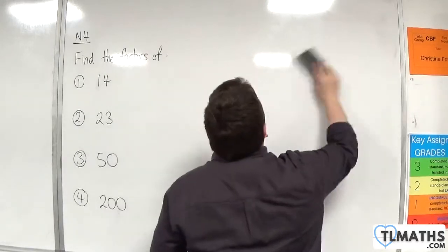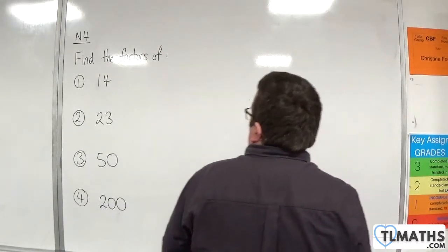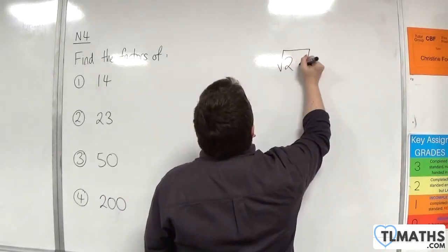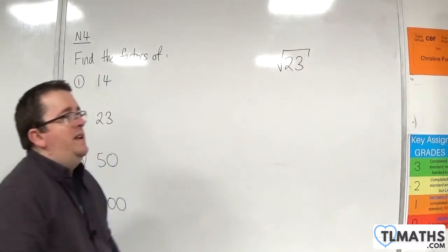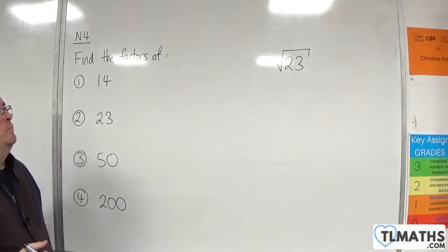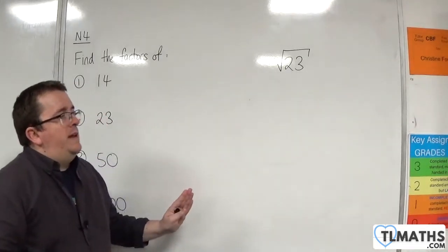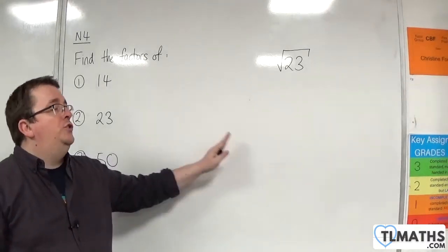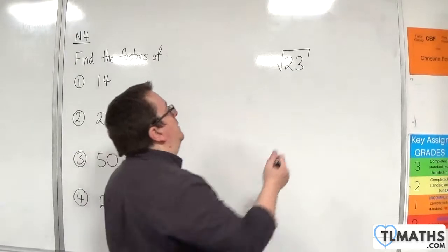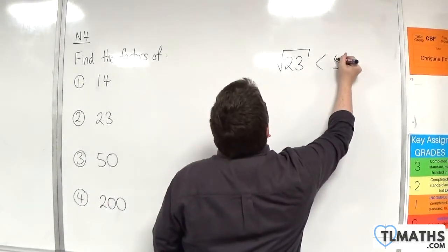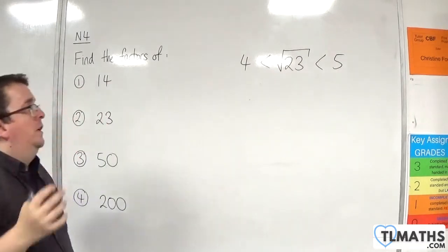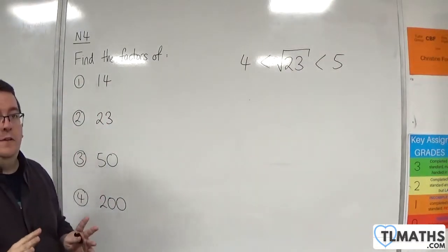Let's take a look at number 2. Now, 23. The square root of 23. Which two square numbers is it between? Well, 23 is between 16 and 25, which is 4 squared and 5 squared. So, this is between 4 and 5. So, I don't need to look any further than 4.